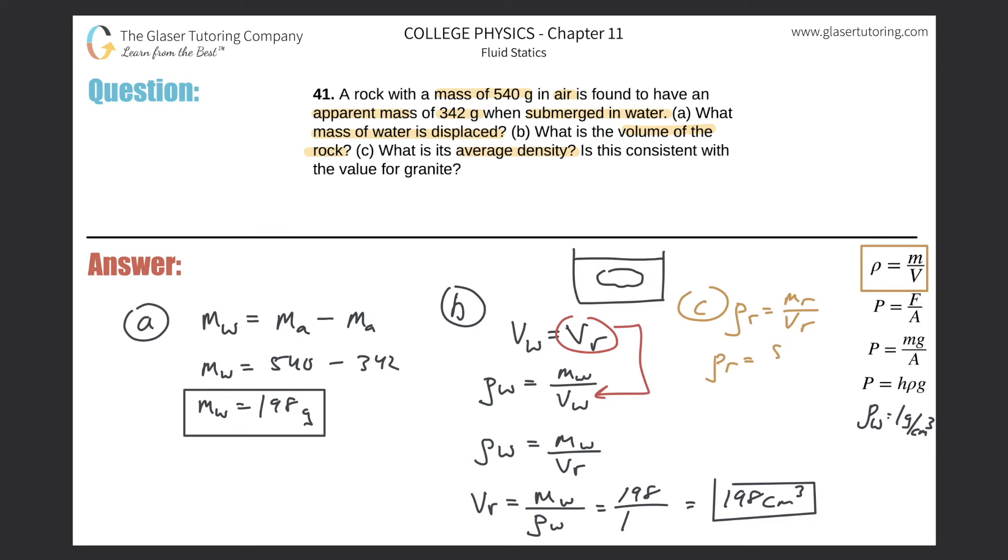So when we calculate this, we have the density of the rock being equal to the mass of the rock, so that's 540, divided by the volume of the rock, which we just found to be 198 cubic centimeters. So you can put that over 198, you can now do your division, just be careful about what units you write down. So this is 540 divided by 198 and we get about 2.73. So 2.73, that is in terms of grams per cubic centimeter because those are the units of the mass and volume I used. So this is therefore the density.